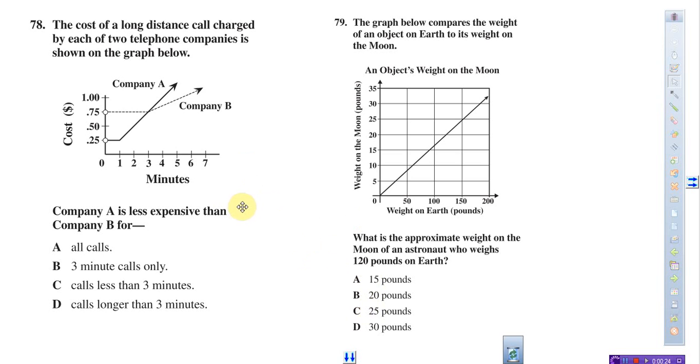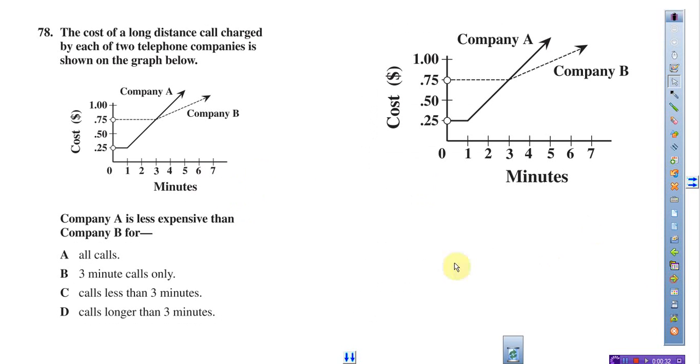We always want to take it slow and make sure we get the right answer instead of just guessing. Let's begin with number 78. On this question, you really want to pay attention to the graph. You should always read everything, but the most important thing here is the graph.